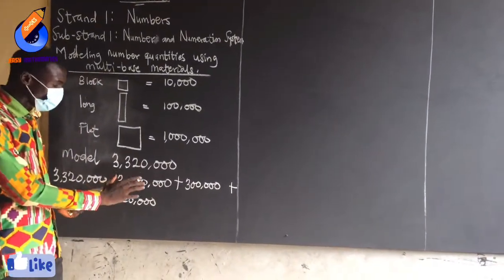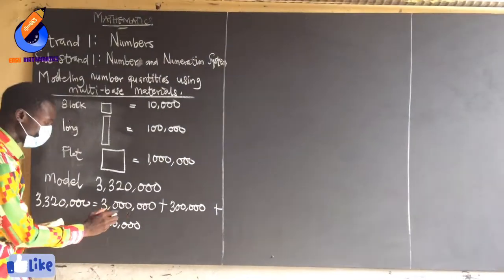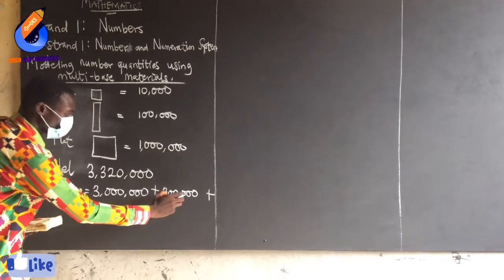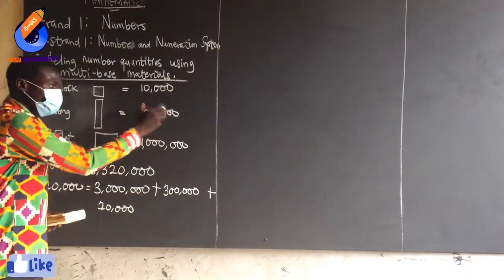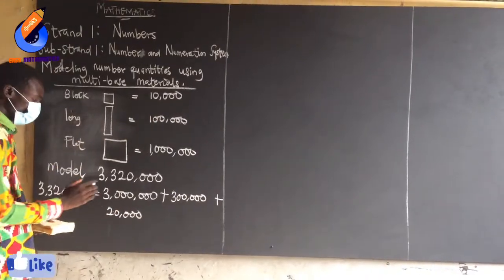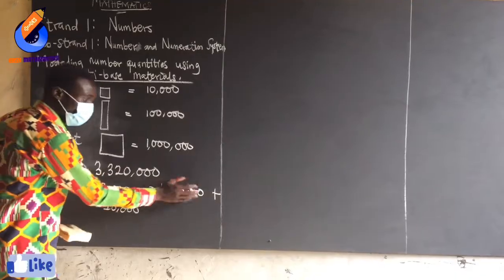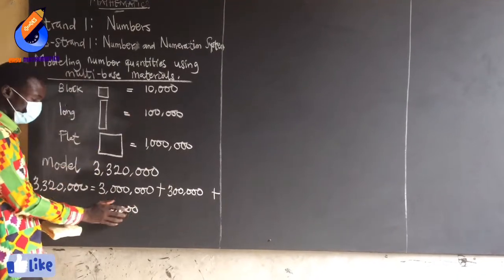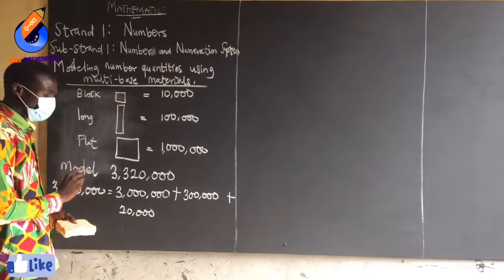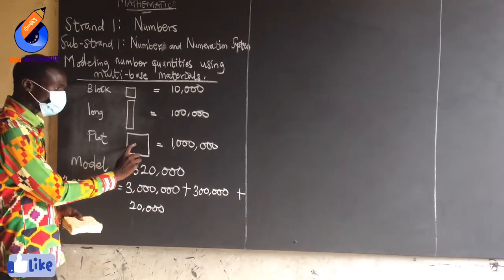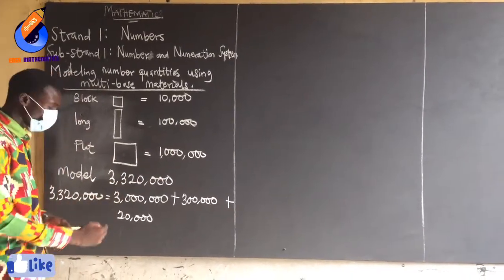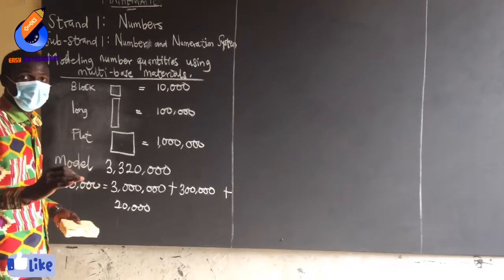You can see clearly that 3 million goes with the flat, 300,000 goes with the long, and 20,000 goes with the block. So you give the millions to the flats, the 100,000s to the longs, and the 20,000 to the blocks. If one flat is giving us 1 million, then how many flats would give us 3 million? 3 flats.